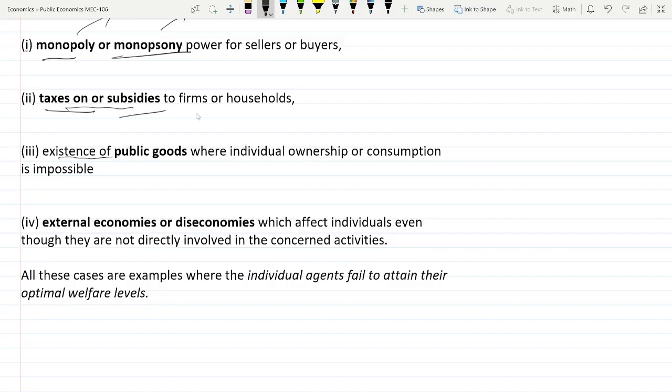Then there comes the existence of public goods. Whenever public goods come, market or private market economy fails to achieve any kind of optimal welfare.